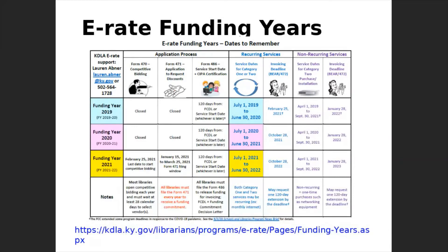I usually like to start my e-rate presentations by orienting people to where we are in the funding year. If you want to download a copy of the most recent e-rate funding year charts, you can find that on the KDLA website. You can see the bottom row in yellow that talks about the dates for funding year 2021, which covers July 1st 2021 to June 30th 2022. We've already gone through competitive bidding and application submission, application review is still underway, and many of you have already received your funding commitment decision letter, which brings us to the form 486.